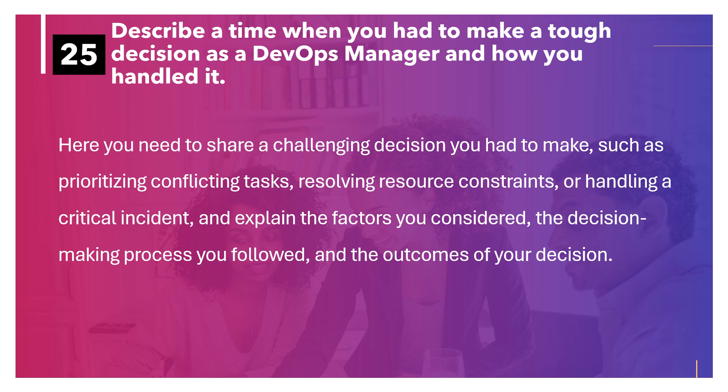Describe a time when you had to make a tough decision as a DevOps manager and how you handled it. You need to share a challenging decision such as prioritizing conflicting tasks, resolving resource constraints or handling a critical incident, and explain the factors you considered, the decision-making process you followed, and the outcomes of your decision.